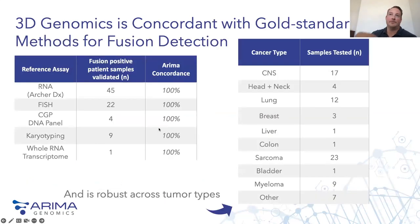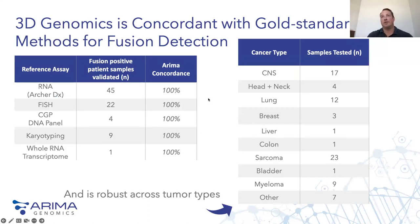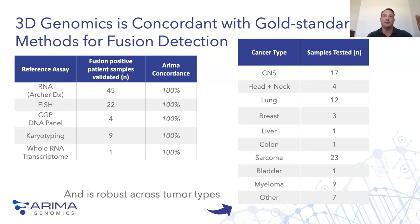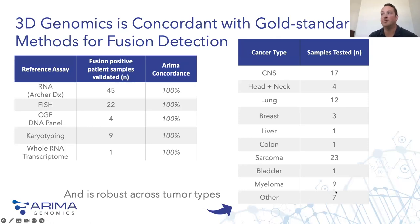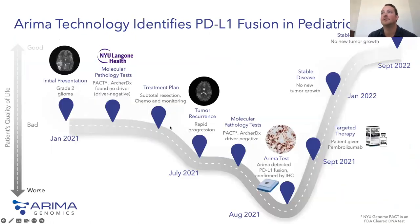As we've been developing this technology, we've done concordance studies comparing HI-C technology to other gold standard technologies for finding fusions, like RNA panels or FISH. In all cases where there's a known fusion, we also find that same fusion, and it's worked across a whole variety of different solid tumor and liquid tumor types.